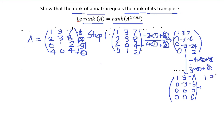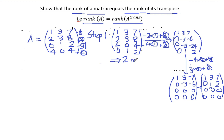We divide the second row by minus 3 so the leading entry becomes 1. The result is: row 1 is 1, 3, 7; row 2 is 0, 1, 2; rows 3 and 4 are all zeros. There are two rows with leading entries of 1, therefore the rank of matrix A equals 2. Step 1 is done.